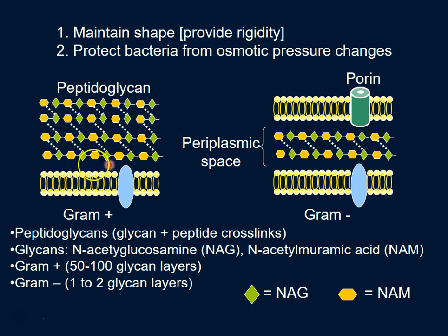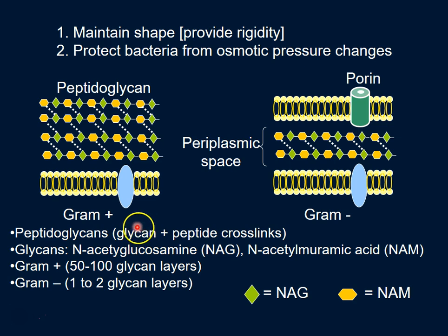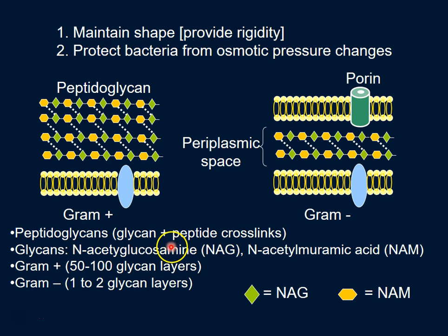The cell wall in both cases is made up of peptidoglycans, and peptidoglycan, as the name suggests, is a combination of glycans or sugars and peptide cross-links.